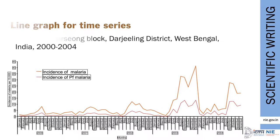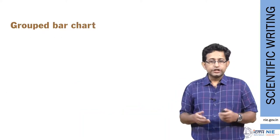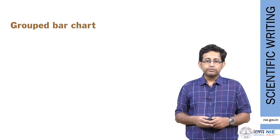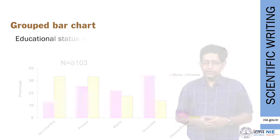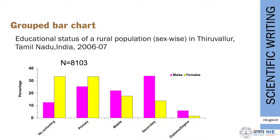Coming to the grouped bar chart — this is a type of bar diagram where we express two or more variables at a time with their sub-classifications. Here we have depicted educational status by gender: males are depicted by pink bars and females by yellow bars. The advantage over a simple vertical or horizontal bar diagram is you can express more variables within it — more than two sub-classifications if needed. The y-axis shows the proportion or percentage in each category.